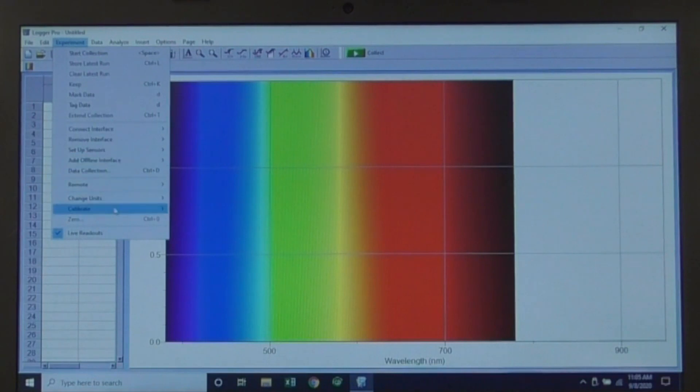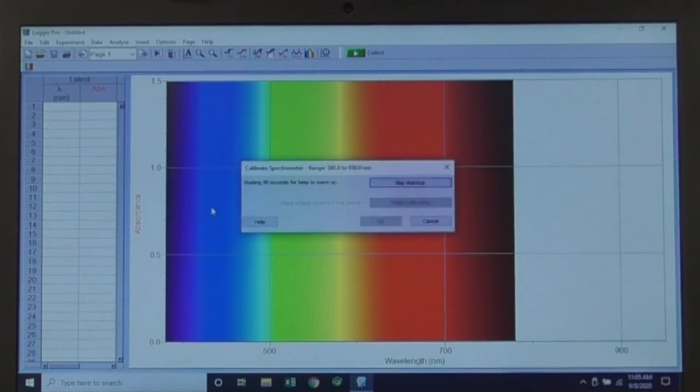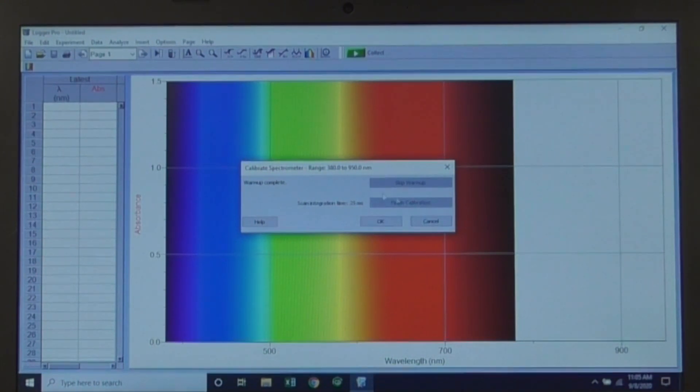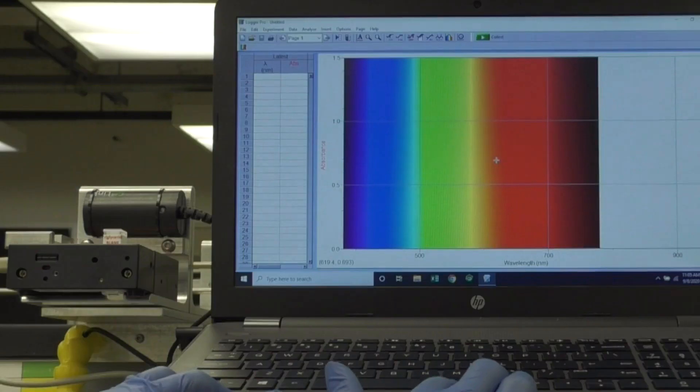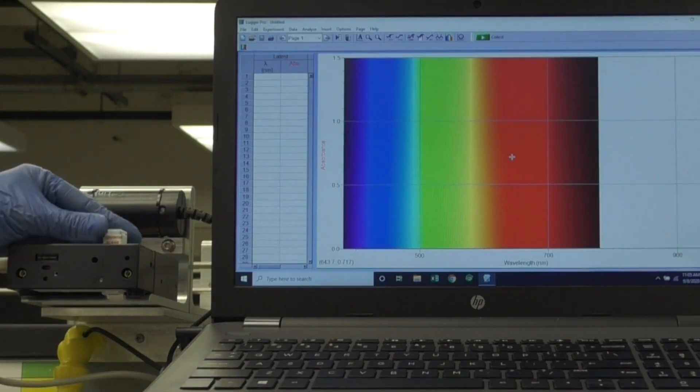Click Experiment, Calibrate, Spectrometer 1. If the spectrometer has been on, you can choose Skip Warm-up. Click Finish Calibration and OK. Place the blank back in the patient block.